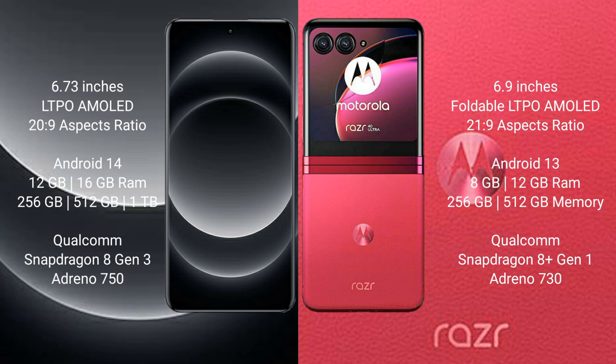The Xiaomi 14 Ultra comes with 12GB or 16GB RAM and 256GB or 512GB internal storage, powered by a Qualcomm Snapdragon 8 Gen 3 processor.